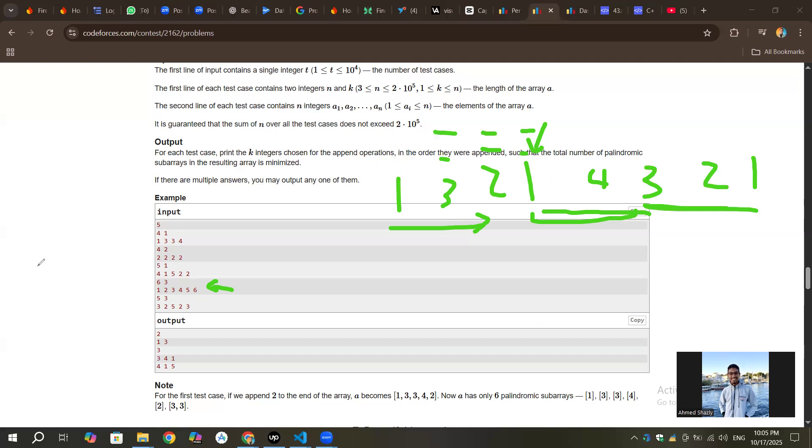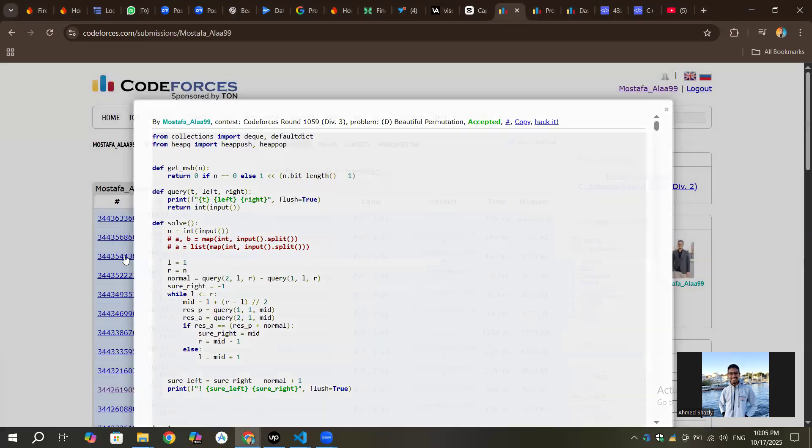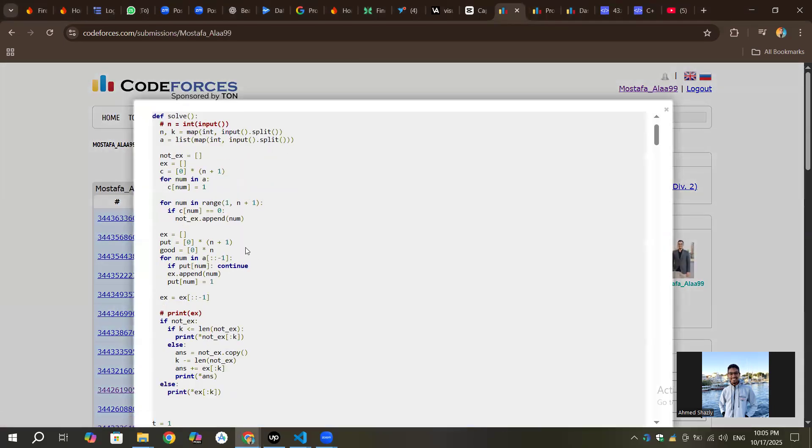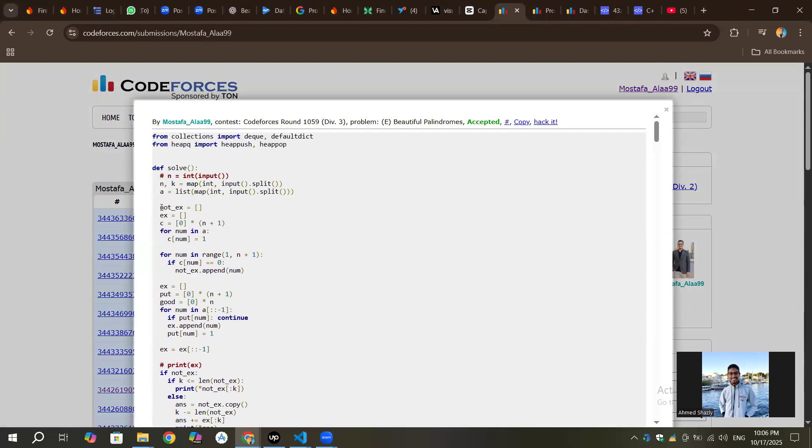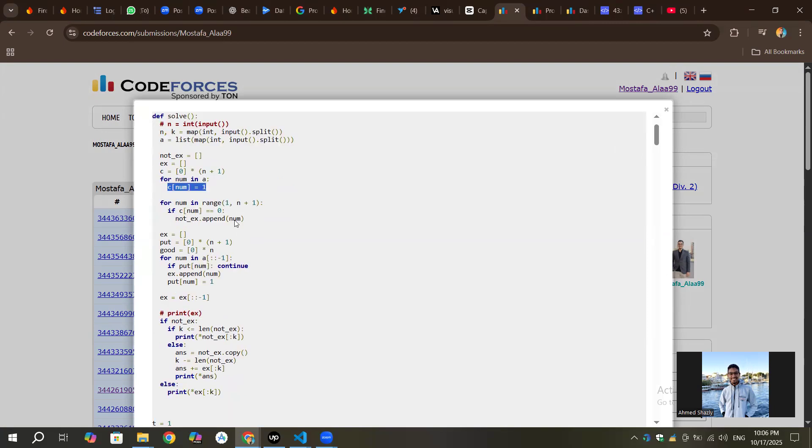But let me show you the code for this problem. So for this problem, I just made two arrays: things that don't exist and things that exist already. I made a counter. My counter is not a real counter, it's just saying exist or no. So if it doesn't exist, I'm just adding it.